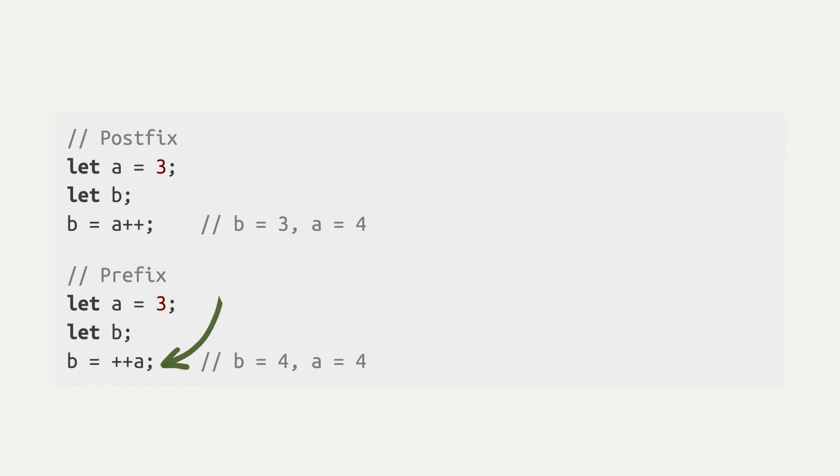If you put plus plus before the variable name — this is the prefix notation — then the actual adding happens before the value is returned. This is why b is 4 here — it gets the value after a is changed. But in the end, in both cases, a becomes 4.